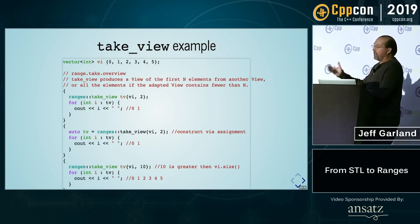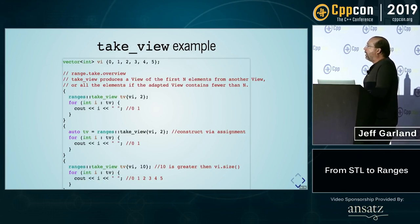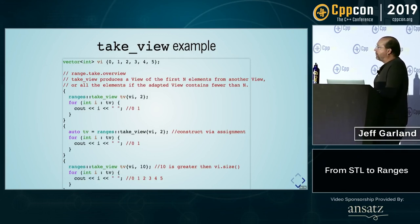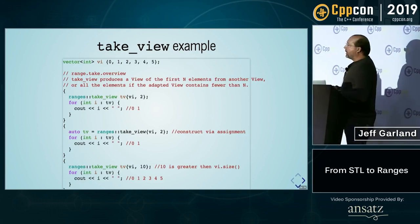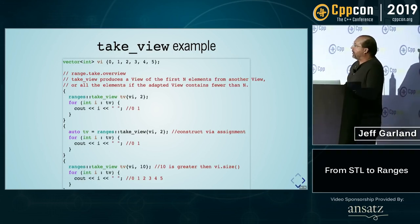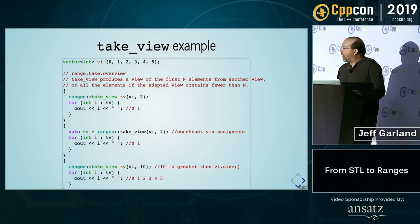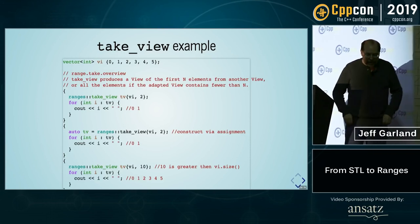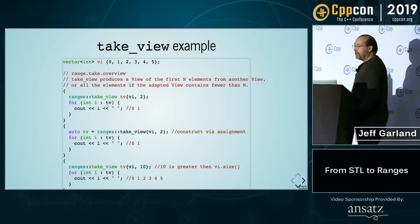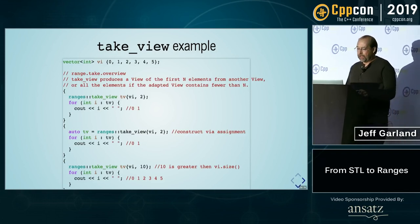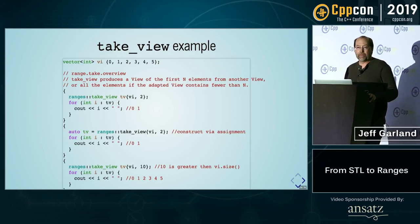Take_view is essentially going to give you a finite number of elements from a range. In this case we're going to take two elements from the range. You can also construct via assignment — because remember, assignment and copy are all cheap. What happens if you specify something that's larger than the size of the range? It turns out it actually does the right thing — it will only iterate over the elements up to the point of the size.